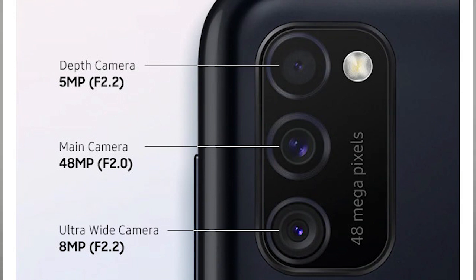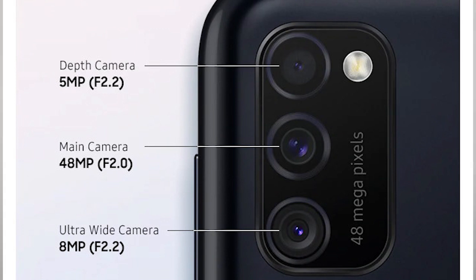If you use the megapixel, you can use the f2.0 aperture, and you can use the camera. This is the f2.2 aperture, and you can use the depth sensor. This is the f2.0 aperture, and you can use the ultra wide lens.